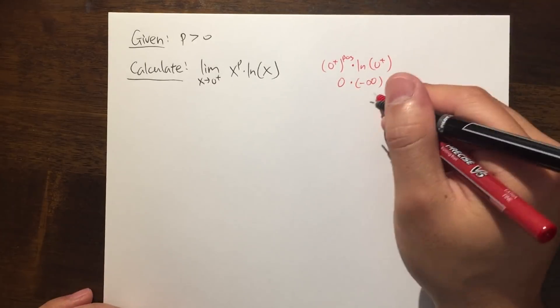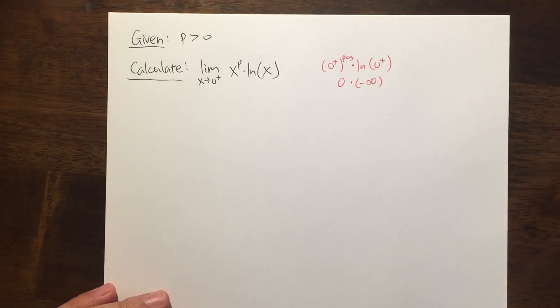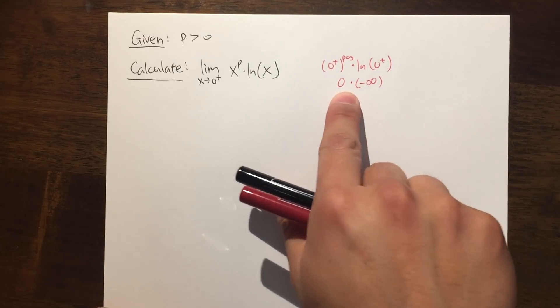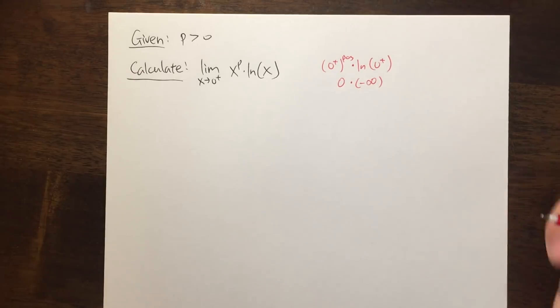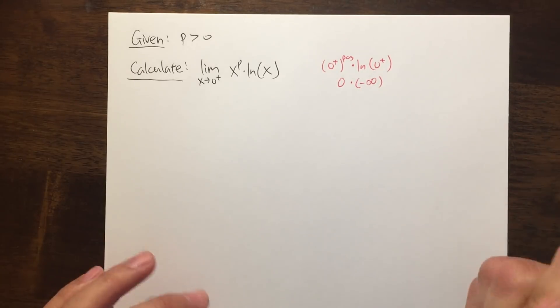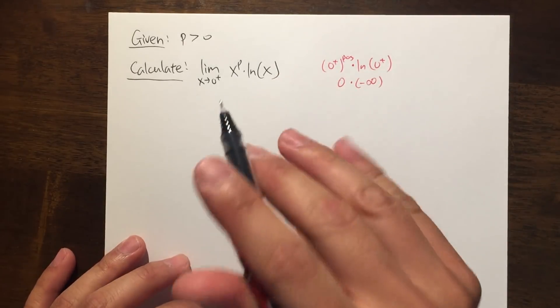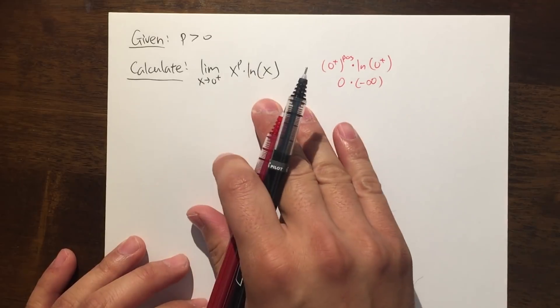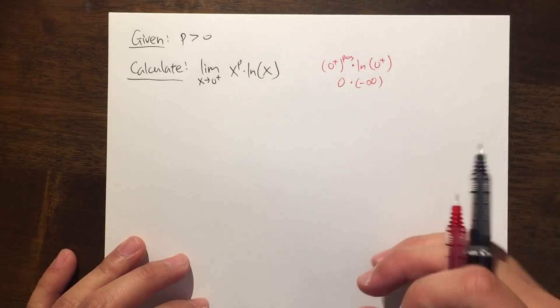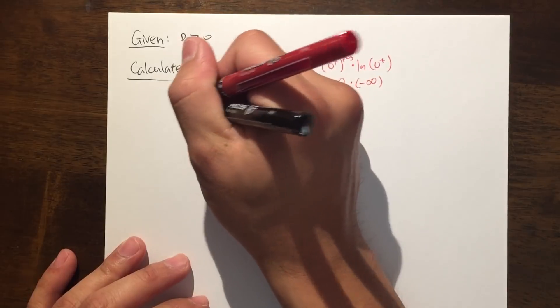And once we have this, can we draw any conclusion? Unfortunately not. And can we also use L'Hôpital's rule right here? Unfortunately not. So we are going to make sure that we have the right form, either 0 over 0 or infinity over infinity.